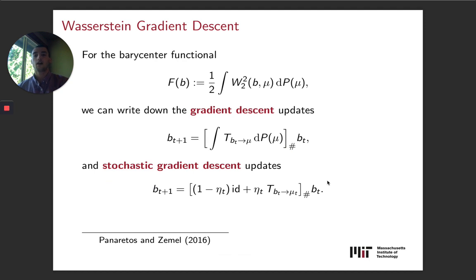Now that we have the gradient, we can easily define what gradient descent and stochastic gradient descent look like. We have our barycenter functional here, which is just the objective in the minimization problem for the barycenter. We can write down the gradient descent updates as follows, which is just literally applying the gradient within the integral. And then the stochastic gradient descent updates are even more intuitive in a way. You're essentially just moving. So you get a sample mu_t from P at each time step t, and then you just move a little ways along the geodesic towards mu_t.